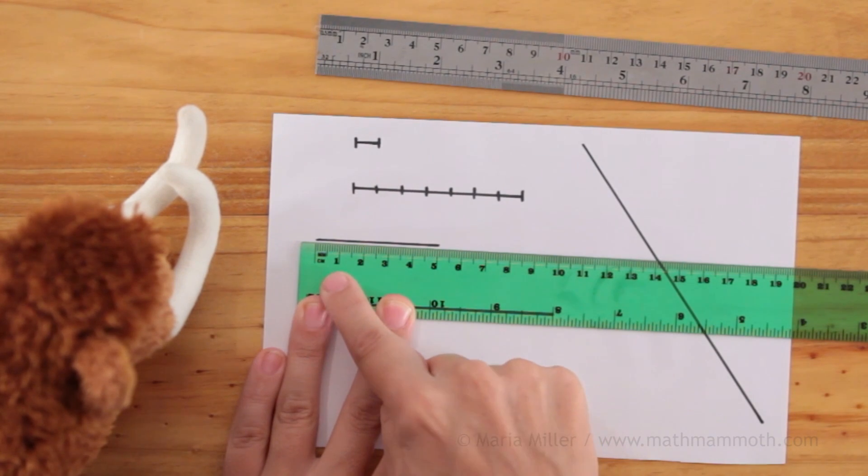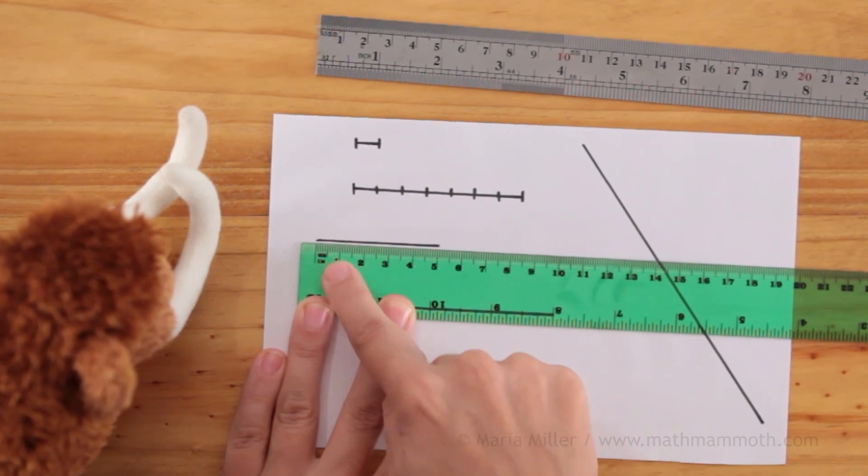You see after each number, one, two, three, after each number, there's a long line. So that marks the end of that centimeter.